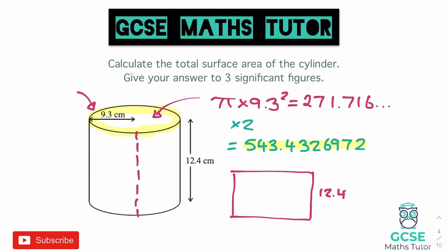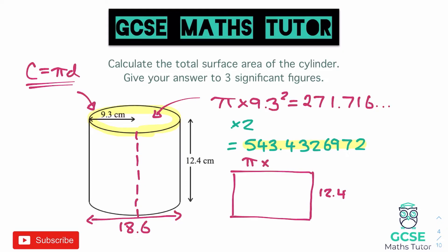The formula for circumference is pi times diameter, or pi times 2r — this one seems to be more recognised so we'll go with circumference equals pi times diameter. That means we need to know the diameter of the cylinder. We have 9.3 as the radius, so doubling that gives us 18.6 as the diameter.